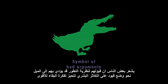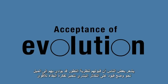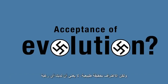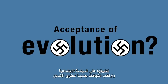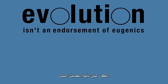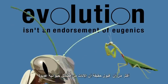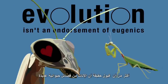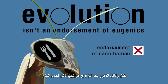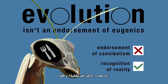Some people feel that an acceptance of evolution implies or leads inevitably towards the desire for supremacist control over the breeding of human beings. But recognising facts about nature doesn't mean you have any wish to apply them to social policy and commit gross violations of human rights. Evolution isn't an endorsement of eugenics any more than accepting the fact that the females of numerous species kill and eat the males after mating is an endorsement of cannibalism. It's simply a recognition of reality.